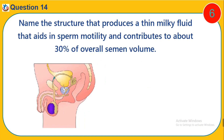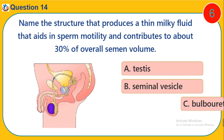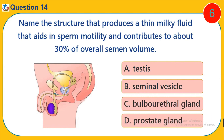Question 14. Name the structure that produces a thin neutral fluid that aids in sperm motility and contributes to about 30% of semen volume. A. Testes. B. Seminal vesicles. C. Urethra. D. Prostate gland.